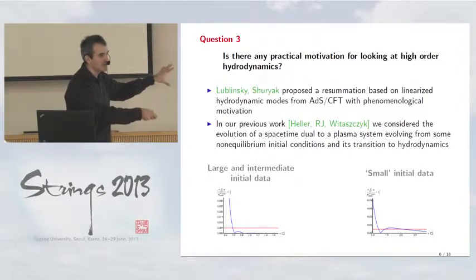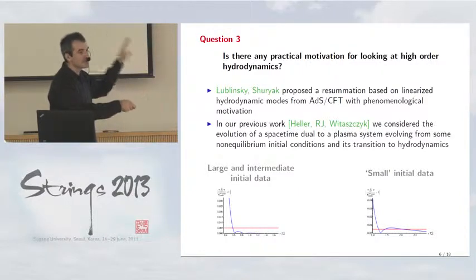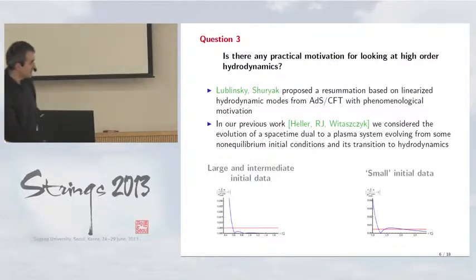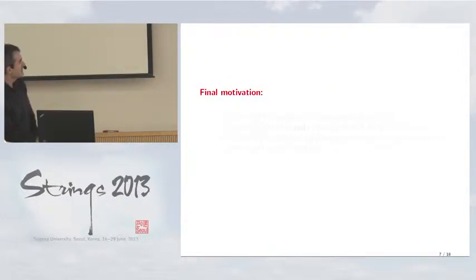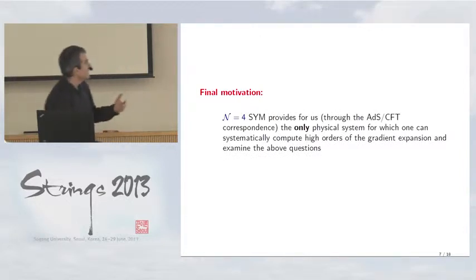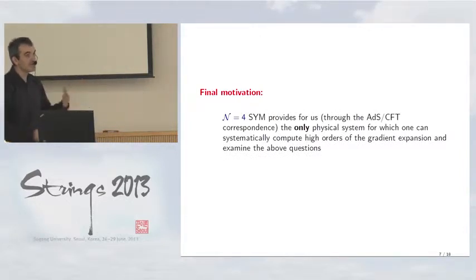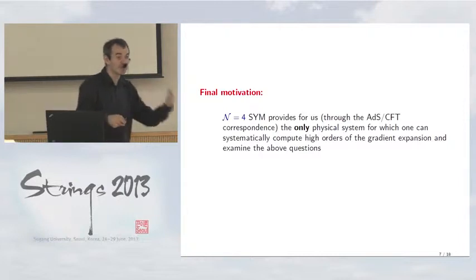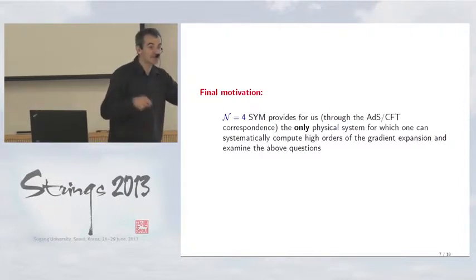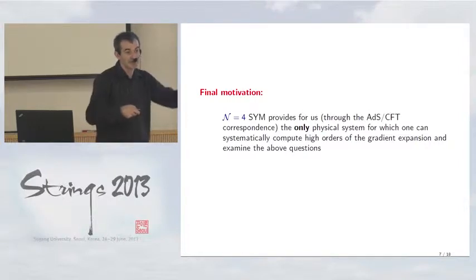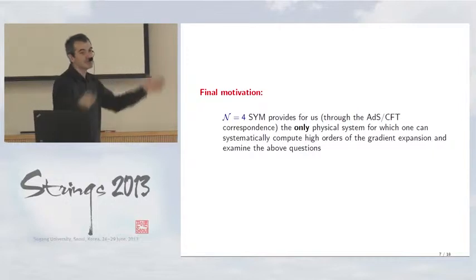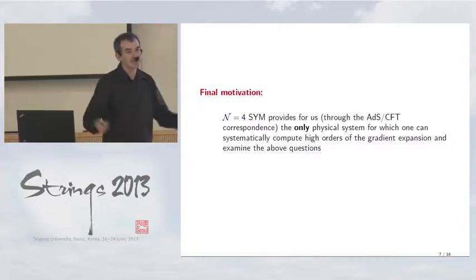These are practical applications, but in this talk I will concentrate on the theoretical questions described earlier. The final motivation is that N=4 super-Yang-Mills provides perhaps the only physical system for which we can do a systematic expansion and compute high orders of gradient expansion. In other known systems one can go to maybe one, two, or four derivatives at most, whereas here we can do much, much better — giving us a real chance to look at Borel structure and convergence properties in fine detail.